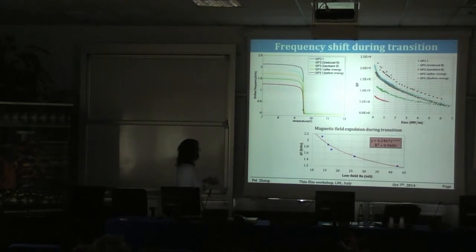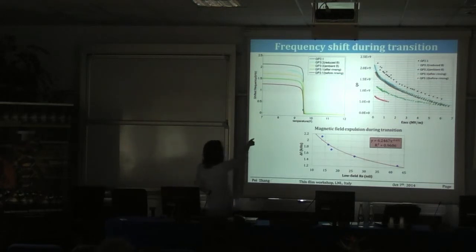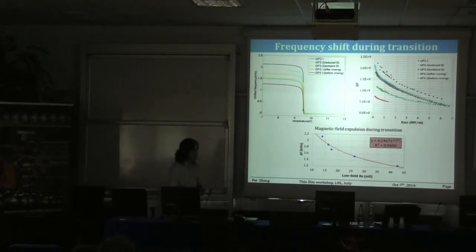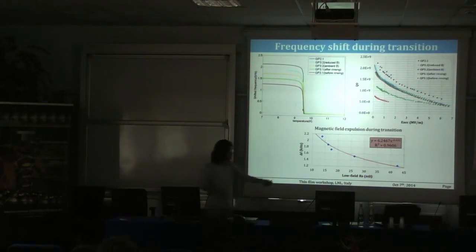Briefly on frequency shift during the transition: the transition temperature is about 9.5K. As you warm up the cavity, the frequency shifts up very quickly. If you look at how much the frequency shifts from the superconducting to the normal-conducting phase and compare it to the low-field Q0, there is a clear correlation — a large frequency shift corresponds to a good cavity, and a small shift to a bad cavity. This is understandable because a good cavity expels more magnetic flux during the transition.